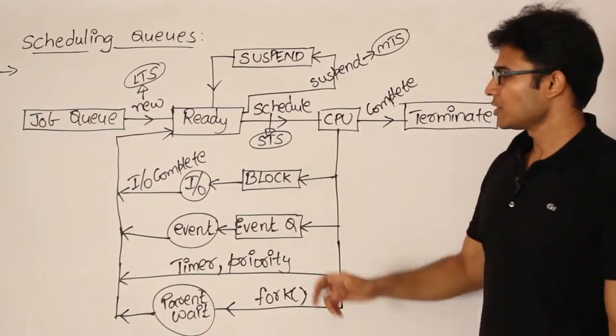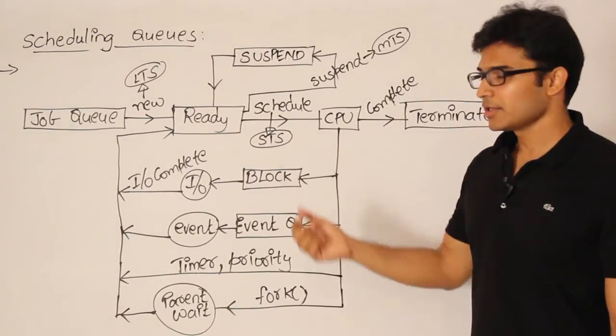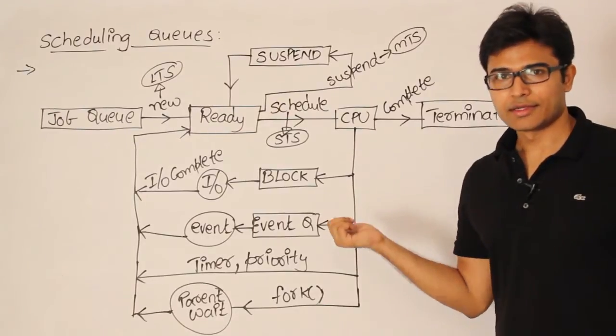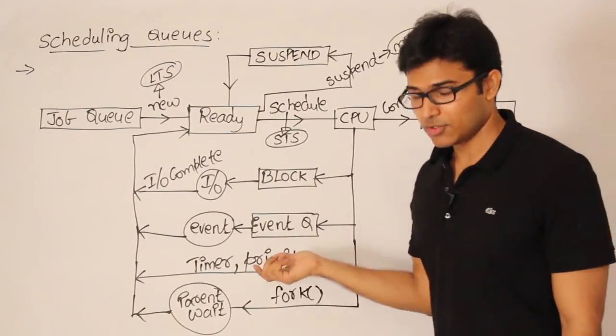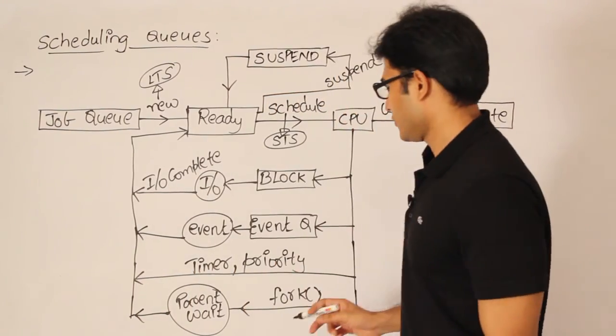And now you know that this short term scheduler will also contain something called as dispatcher. And dispatcher is the one which is responsible for context switching. With examples, it will be clear. Don't worry about the theory. Even if you don't understand anything now, with lots of examples, the points will be clear. Fine.